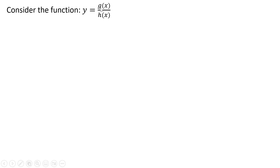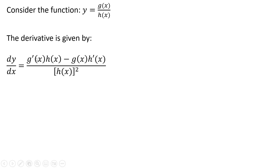Consider the function y, where y equals g of x divided by h of x. The derivative is given by the following: we're going to take the derivative of the numerator and multiply it by the denominator, and then subtract what's in the numerator multiplied by the derivative of the denominator. In the denominator, we're going to square what we have down here.